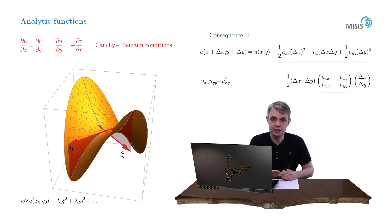It's equal to uxx uyy minus uxy squared. But as we just proved from Cauchy-Riemann conditions, uxx can be rewritten as vxy, while uyy can be rewritten as minus vxy. So what we obtain is minus vxy squared minus uxy squared. Therefore, the determinant is always negative, meaning that every critical point of a holomorphic function is actually a saddle for its real part.